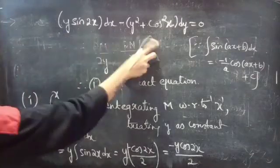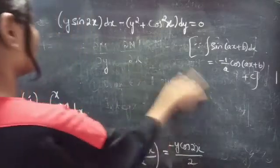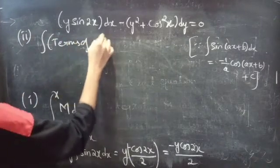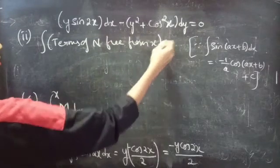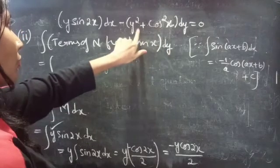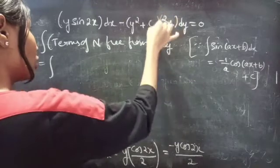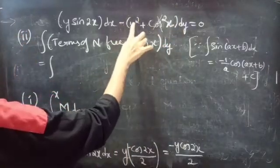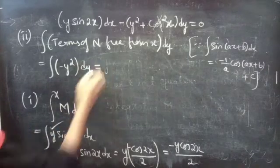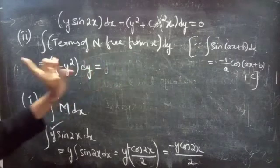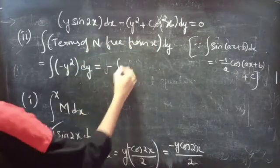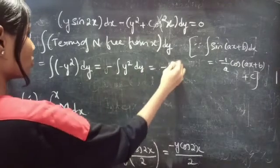Second, we find the integral of the terms of N that are free from x, with respect to dy. From N, the term free from x is minus y squared — we do not consider cos squared x here. So this integral equals the integral of minus y squared dy, which equals minus y cubed over 3.